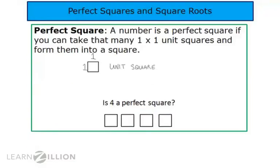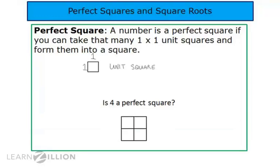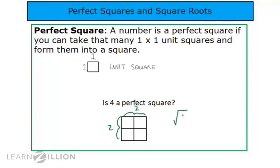Is four a perfect square? Yes, four is a perfect square because you can take four one-by-one unit squares and form them into a two-by-two square. Therefore, four is a perfect square and its square root is two, because the side length of the square it forms is two.